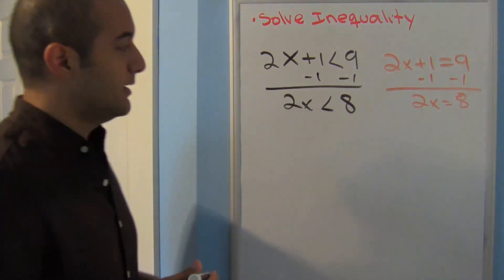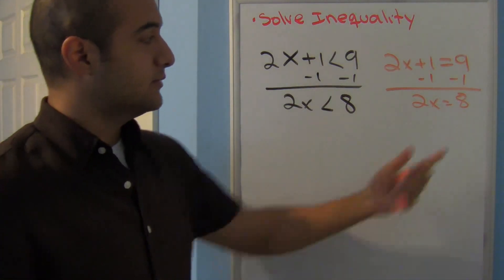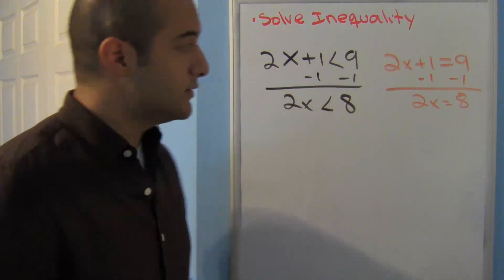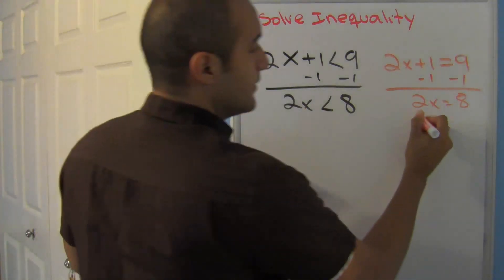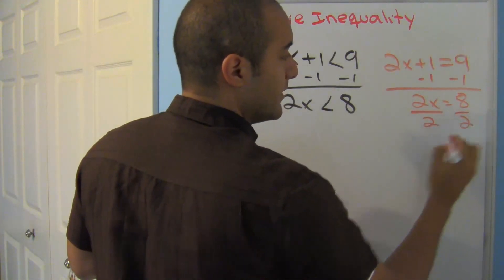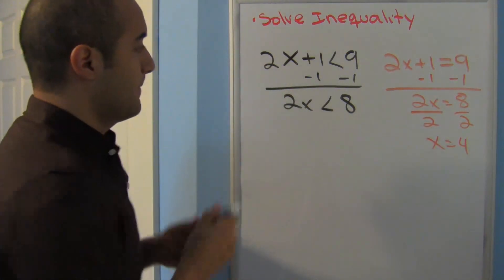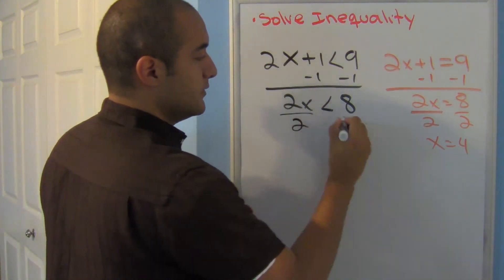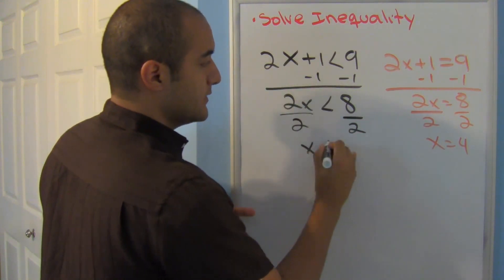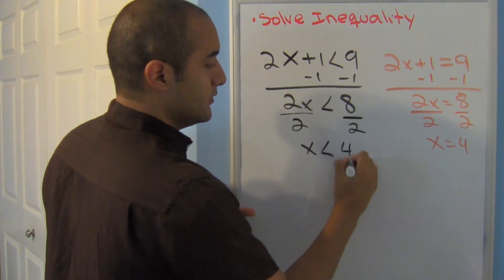So notice the steps are the same so far. Now here I would divide by 2 on both sides, divide by 2, divide by 2, and x is equal to 4. So it's the same thing. Divide by 2, divide by 2, x is less than 4.